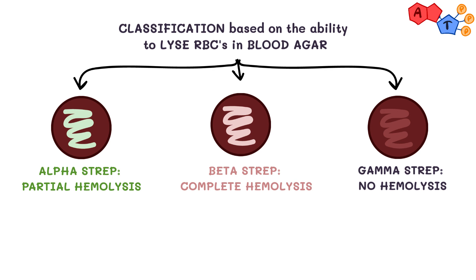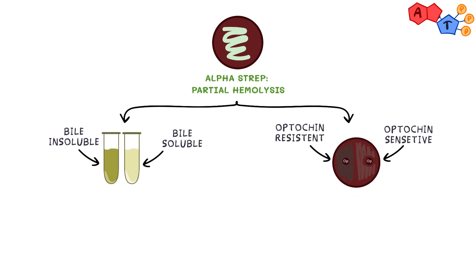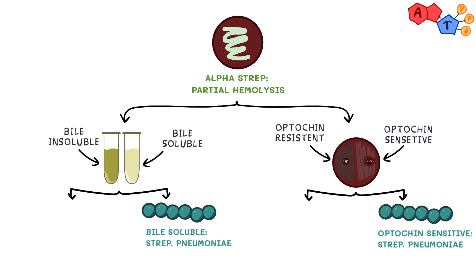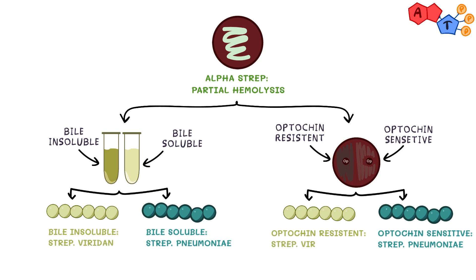Also, for the gamma group, they can grow in bile. Now we will mention special features that can help us further divide each of these groups. For alpha streptococci, we can divide them based on optochin sensitivity and bile solubility. If an alpha strep species lyses in the presence of either of the two, then it's Streptococcus pneumoniae. If it's insoluble or resistant, then it's among the viridans streptococci group, either Streptococcus mutans or Streptococcus mitis.